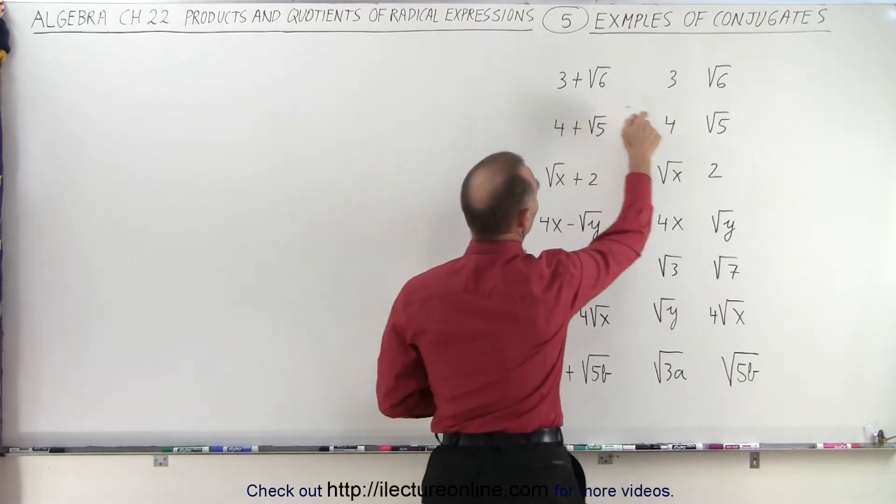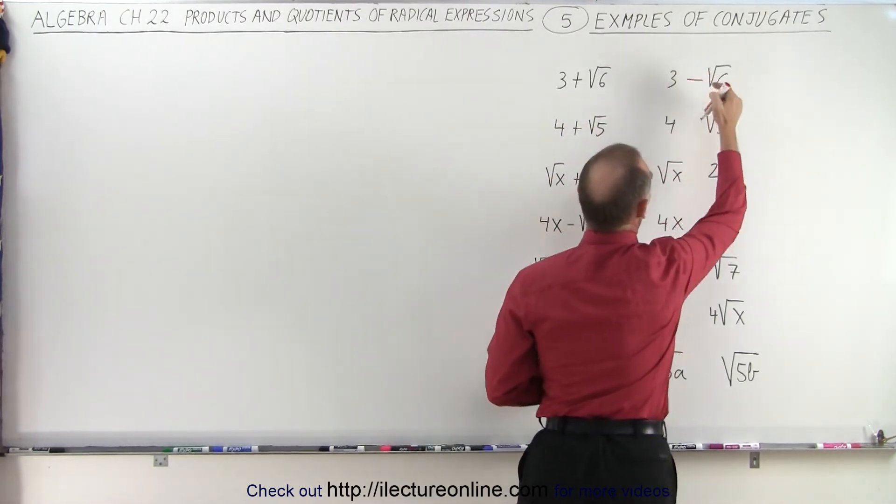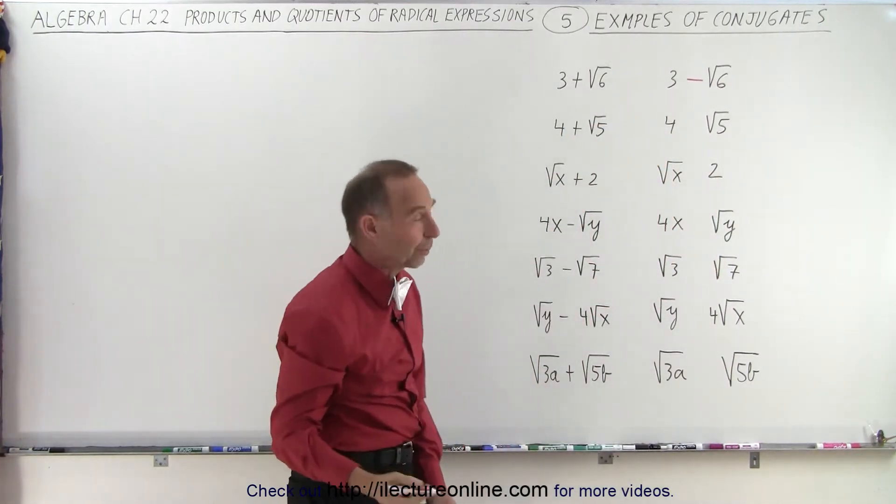So here we have 3 plus the square root of 6. So 3 minus the square root of 6 is the conjugate of 3 plus the square root of 6.